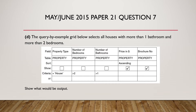Part D: the query by example grid selects all houses with more than one bathroom and more than two bedrooms. Looking at the QBE grid, the show criteria is unchecked for property type, number of bedrooms, and number of bathrooms. It is only checked for price in dollar and brochure number, which are the only values we will output. The price should be in ascending order, property type must be 'house', number of bedrooms greater than 2, and number of bathrooms greater than 1.